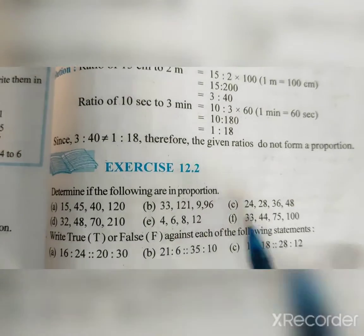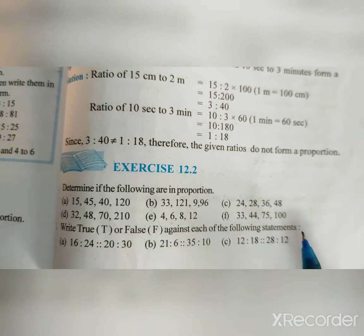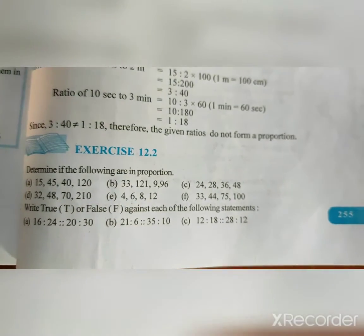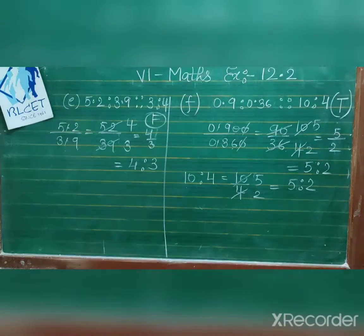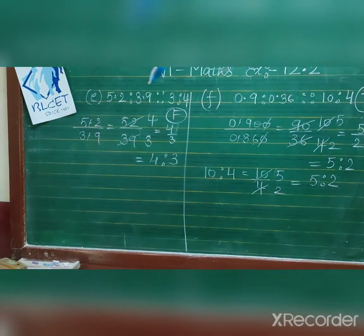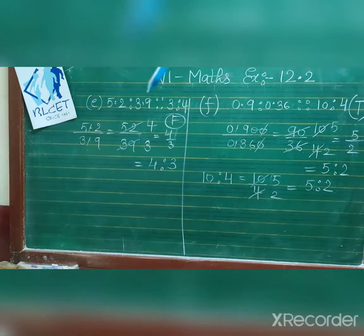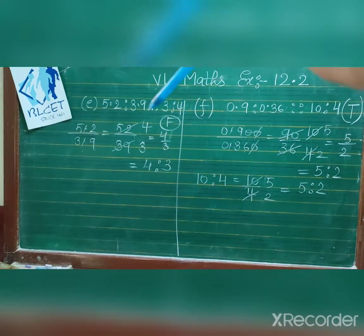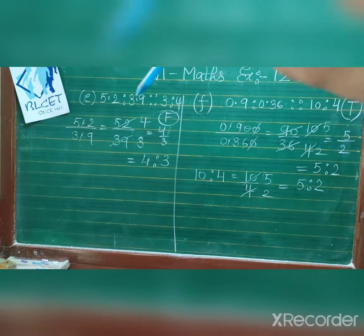Solve B, C, D, E, F the same way. For question on true or false: if both ratios are equal then true, if not equal then false. For E: 5.2 is to 3.9 with proportion sign as 3 is to 4. We check: 5.2 upon 3.9 - removing decimals gives 52 upon 39, which is 4 is to 3. Since 4 is to 3 is not equal to 3 is to 4, this statement is false.